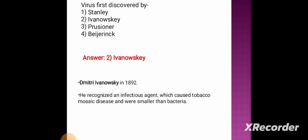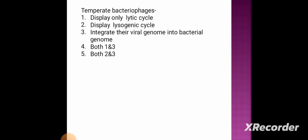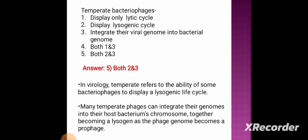Next question: temperate bacteriophages — option 1: display only lytic cycle, option 2: display lysogenic cycle, option 3: integrate their viral genome into bacterial genome, option 4: both 1 and 3, option 5: both 2 and 3. The correct answer is option 5, both 2 and 3. Temperate phages display the lysogenic cycle and integrate their viral genome into the bacterial genome. In virology, temperate refers to the ability of some bacteriophages to display a lysogenic life cycle, with many temperate phages integrating their genomes into the host bacterium's chromosome, becoming a lysogen as the phage genome becomes a prophage.